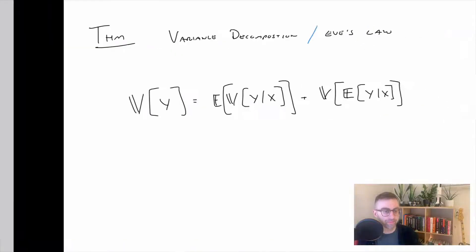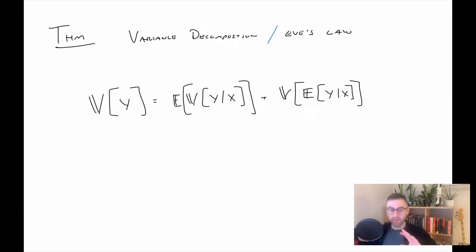Okay, so related to Adam's law we also have Eve's law which talks about total variance. This could also be called variance decomposition or law of total variance—goes by a number of different names. But basically what we're trying to do here is we want to decompose the marginal variance of Y.